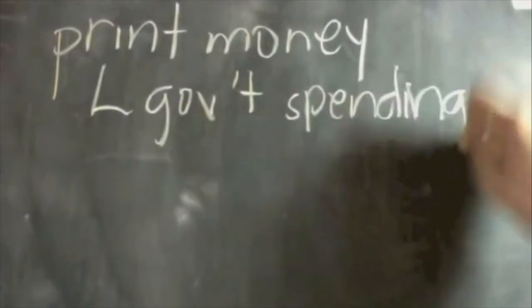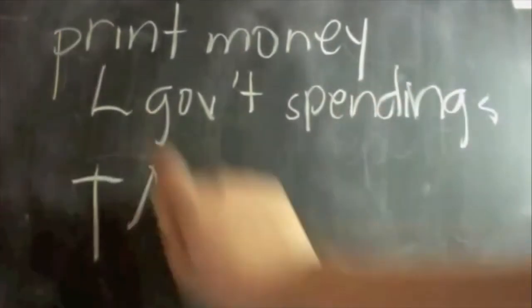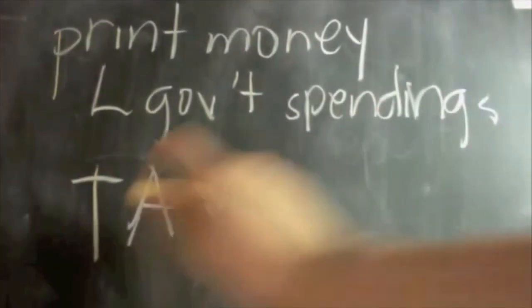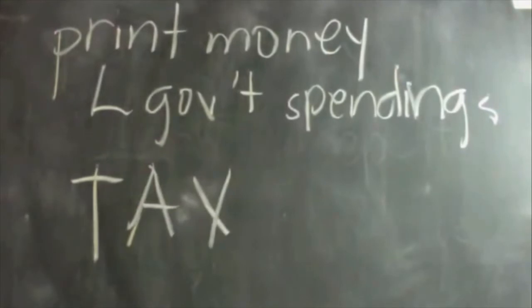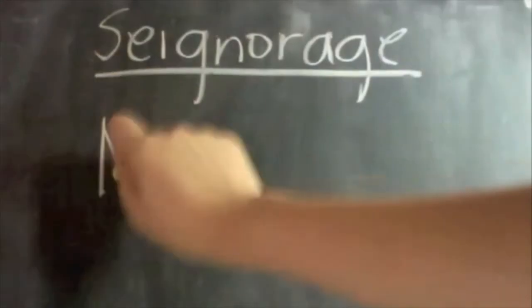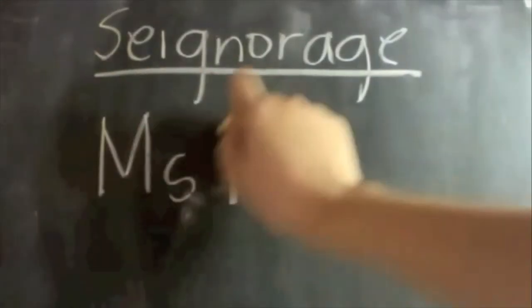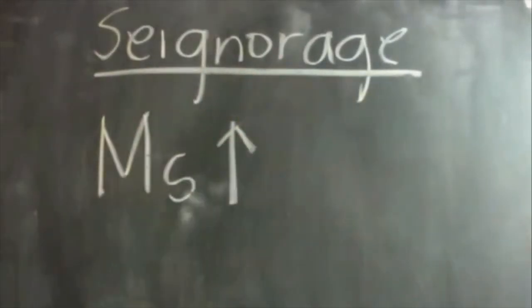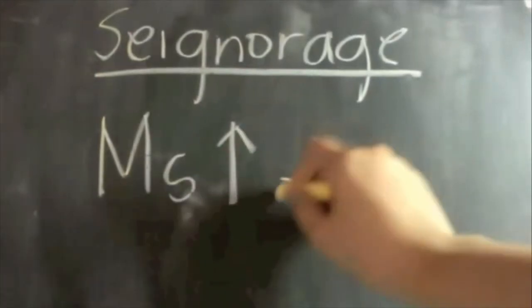In essence, to calculate the profit of note issue, the Bank of England uses the total value of the bank notes circulating in the economy. This is what economists call M0. The Treasury makes £0.97 for every £10 note produced by the Mint and put into circulation by commercial banks.